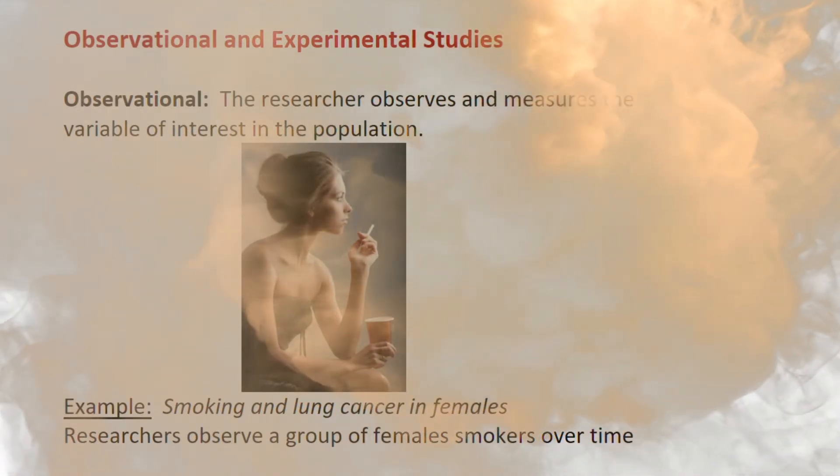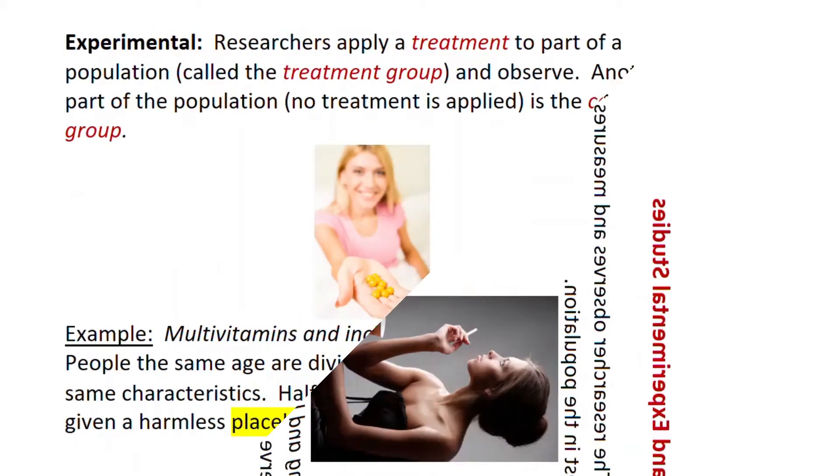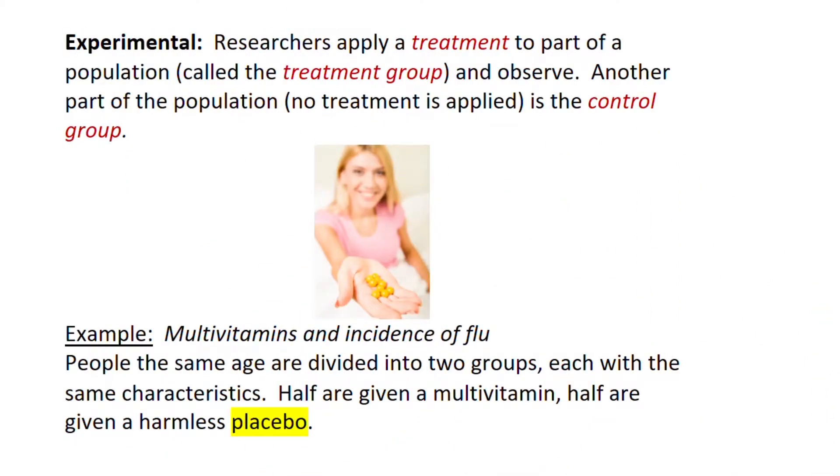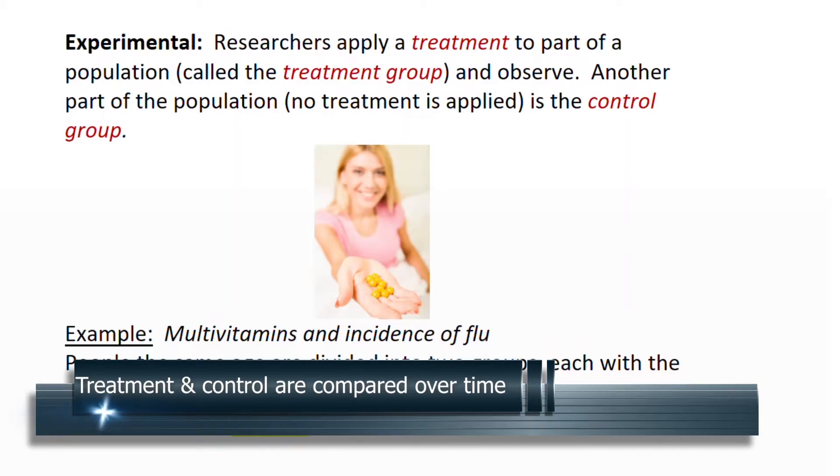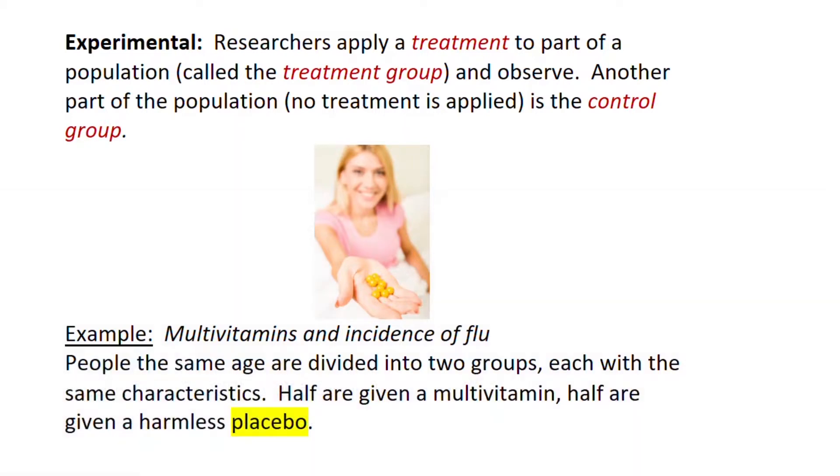The other type of study is an experimental study, and the researcher is very deliberate here. They apply a treatment and then observe responses. So they divide the population up into a treatment group and a control group. The treatment group receives the treatment and the control group often receives a harmless placebo that looks just like the treatment, and then the two groups are compared.